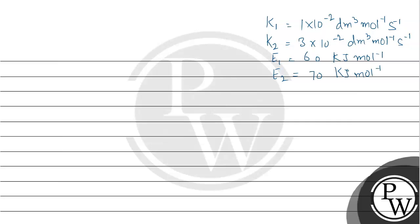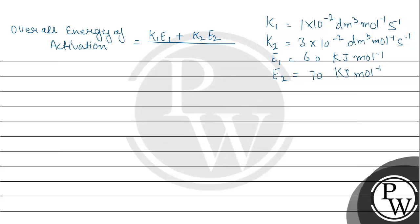We have the formula for the overall energy of activation: it is equal to (k1 multiplied by E1 plus k2 multiplied by E2) divided by (k1 plus k2). Substituting values: k1 is 1 x 10 raised to power minus 2, E1 is 60, plus k2 is 3 x 10 raised to power minus 2, multiplied by E2 which is 70, divided by k1 plus k2, which is 1 x 10 raised to power minus 2 plus 3 x 10 raised to power minus 2.